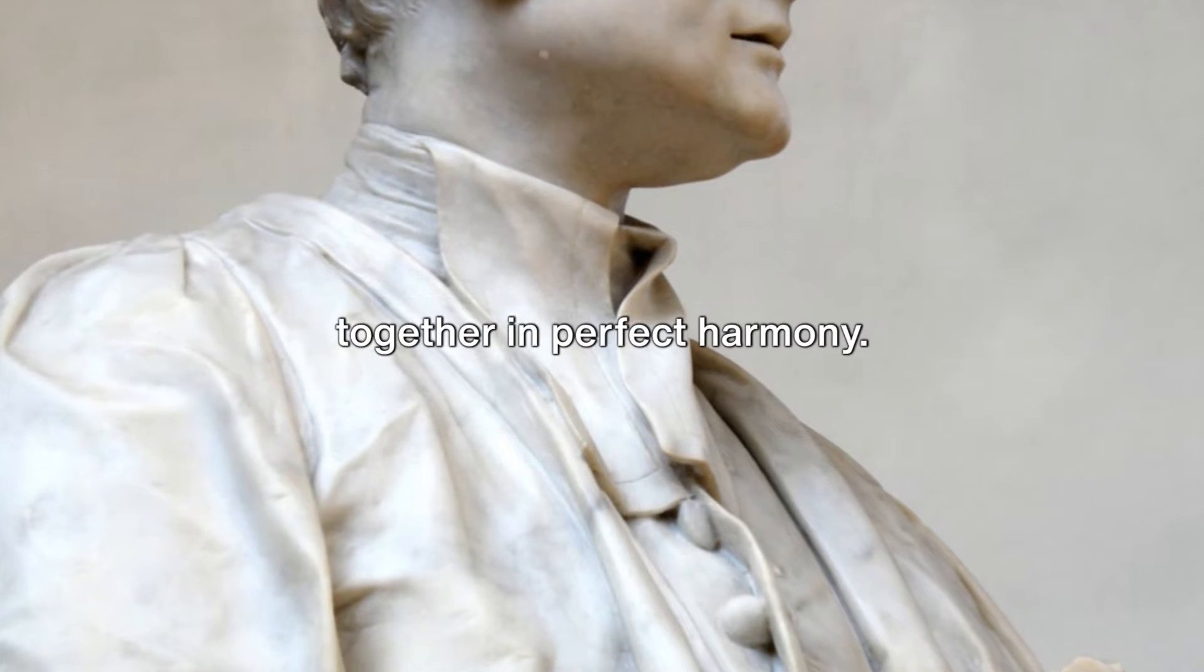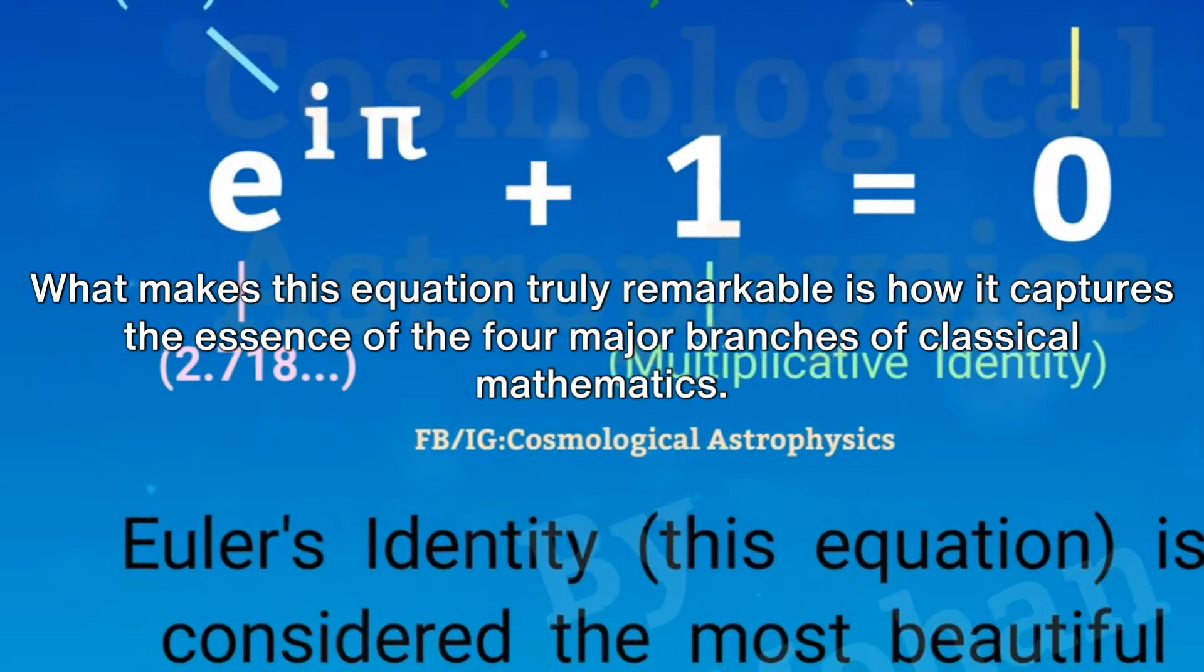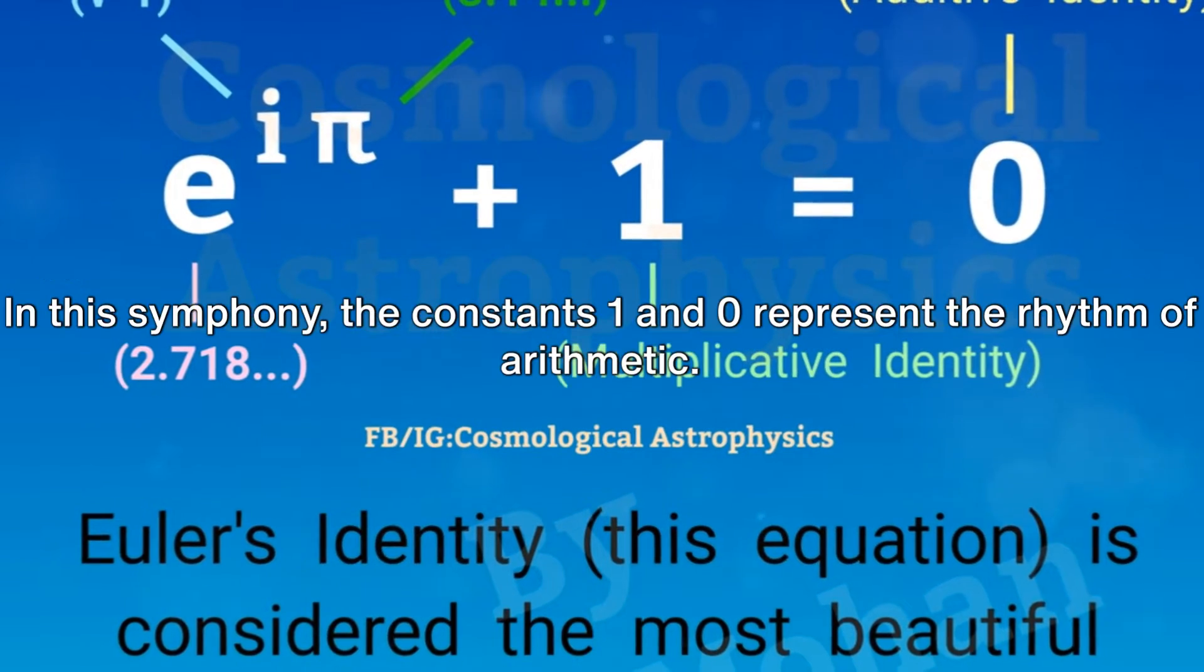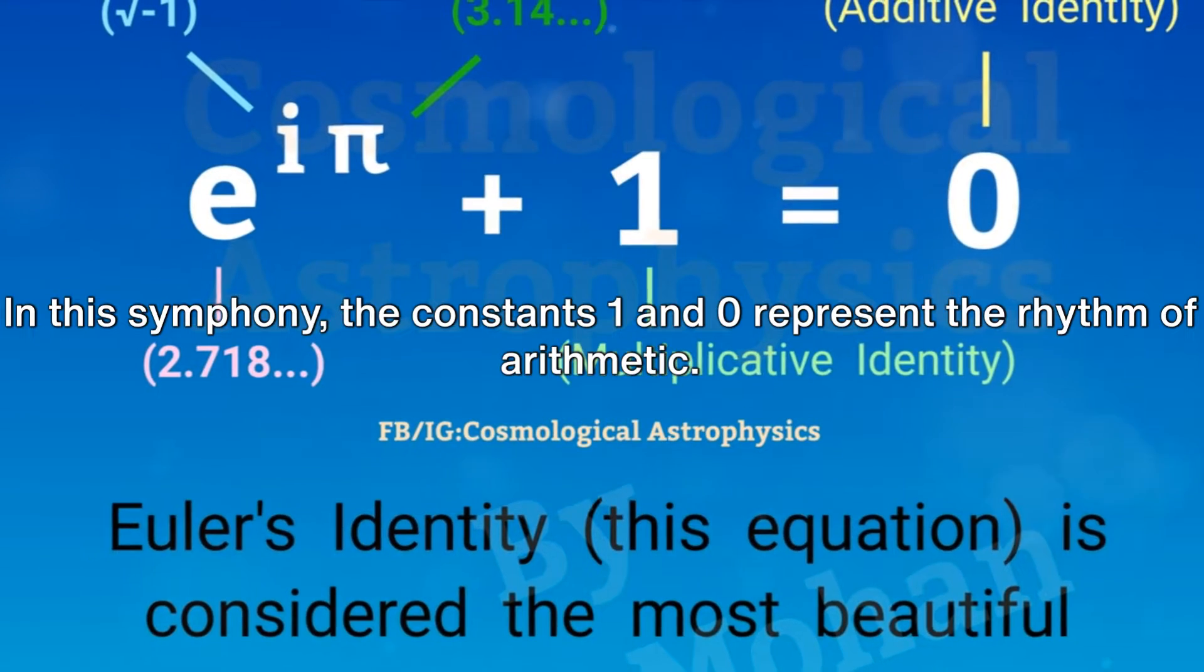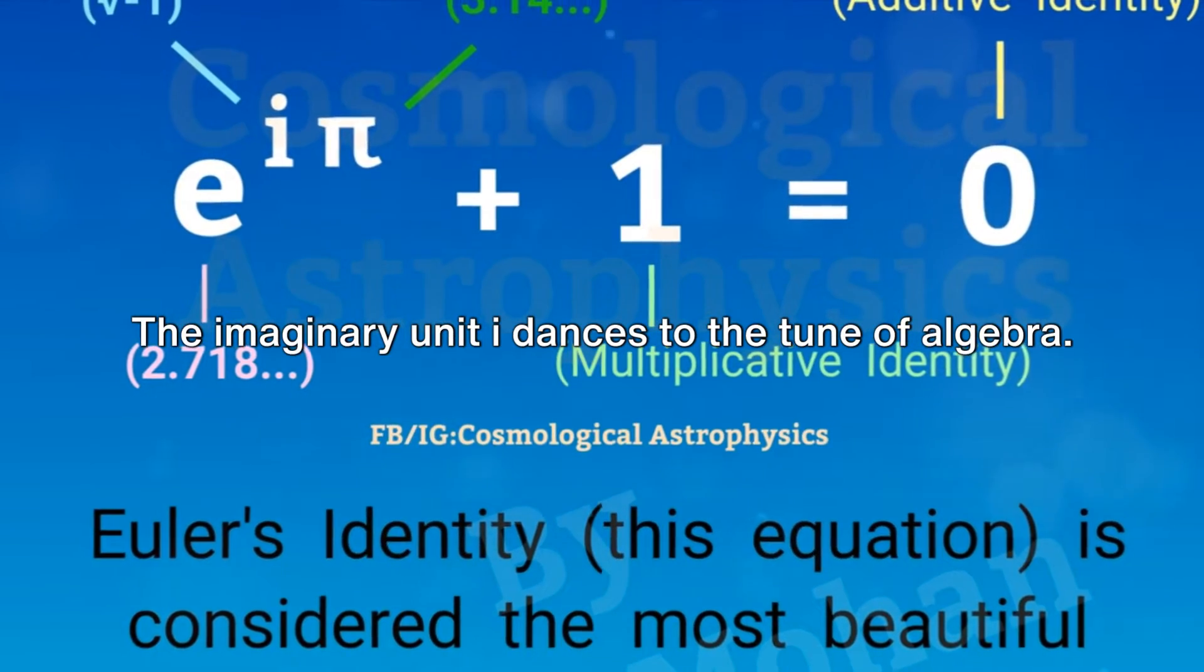What makes this equation truly remarkable is how it captures the essence of the four major branches of classical mathematics. In this symphony, the constants one and zero represent the rhythm of arithmetic, the imaginary unit i dances to the tune of algebra, the constant pi gracefully embodies the elegance of geometry, and the base of natural logarithm e whispers the complexities of analysis.